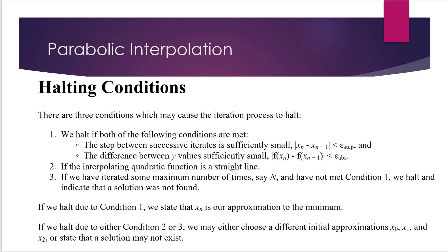The first one is that we halt if both of the following conditions are met. There are condition A and condition B, and both of them need to be satisfied. Condition A is that the step between successive iterates is sufficiently small, meaning the absolute value of x_n minus x_{n-1} should be less than a constant called epsilon step.